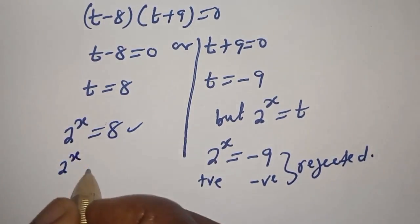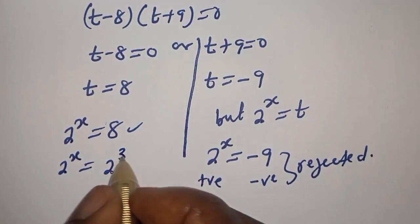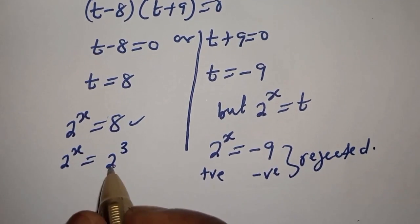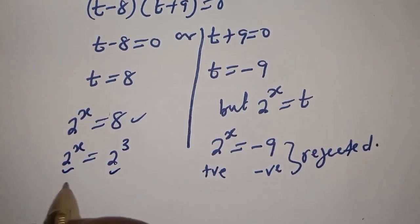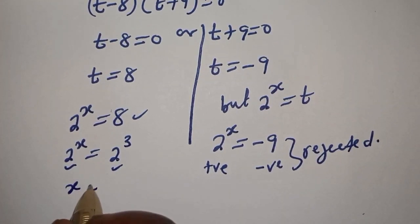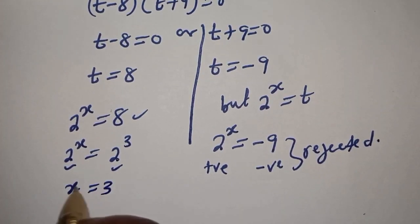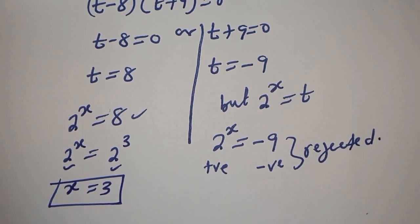So 2 raised to power S is equal to 8, which is 2 raised to power 3. Since they have the same base, S is equal to 3. This is the final answer.